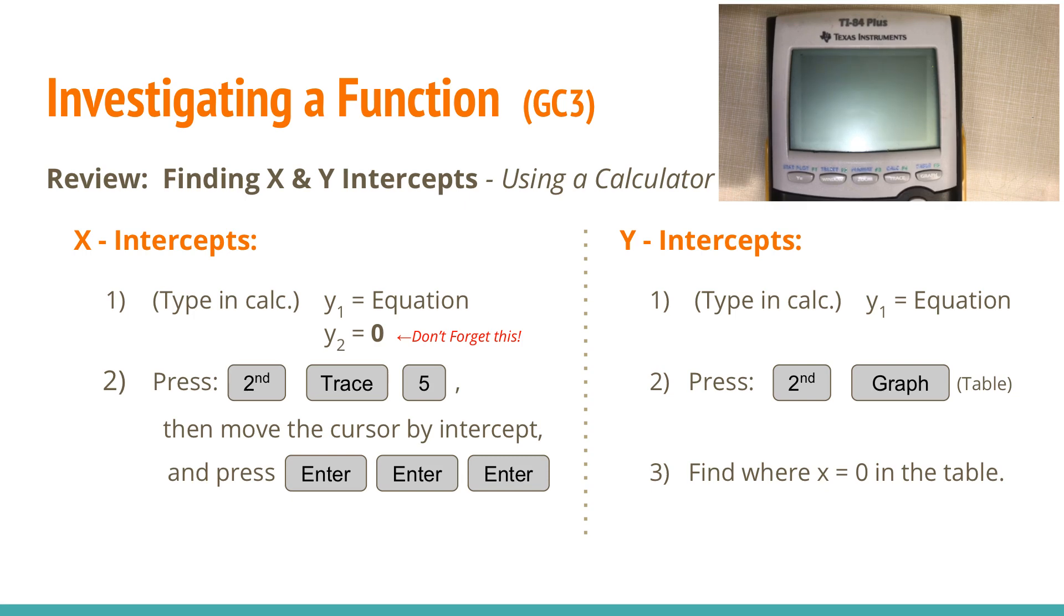Here's an example on the screen in the top right corner here. If you turn your calculator, you'd go y equals, enter your calculator equation here, put in the second equation as zero, and again if I want to find the x-intercepts of this equation right here, I would press second trace 5, enter, enter, enter.